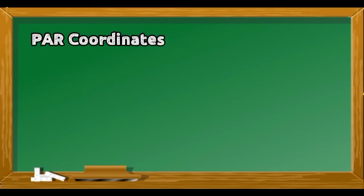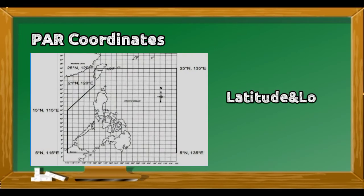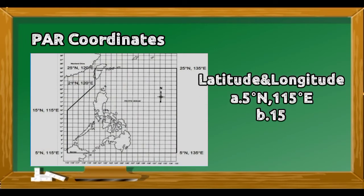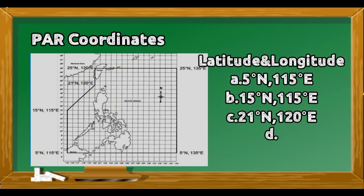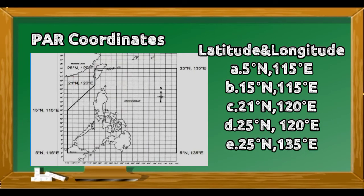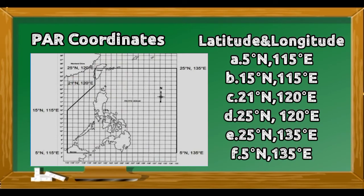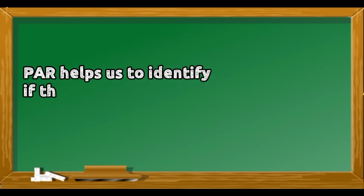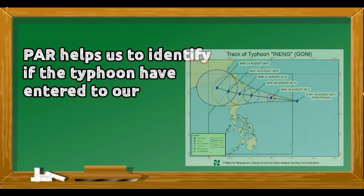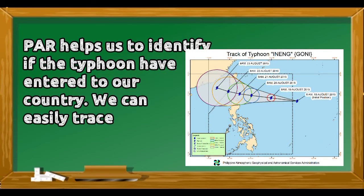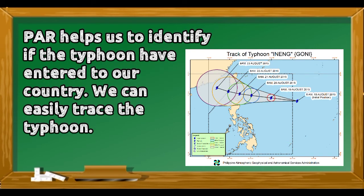The Philippine Area of Responsibility has specific coordinates, and we have some points to follow. It helps us identify if a typhoon has entered our country so we can easily trace it.